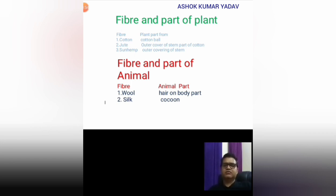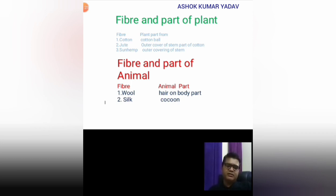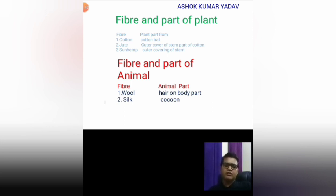Next, the animal source of fiber. We get wool and silk from different body parts of animals, like the hair on the animal's body surface. Wool we get from the outer body parts of animals like sheep, camel, and goat. There are many categories of wool — some are harsh or rough, used for making different garments, and some categories are soft, used for making shawls and sweaters. Another example of animal source fiber is silk. We get silk from the cocoon — inside the cocoon there is a thread-like structure synthesized by the silkworm.